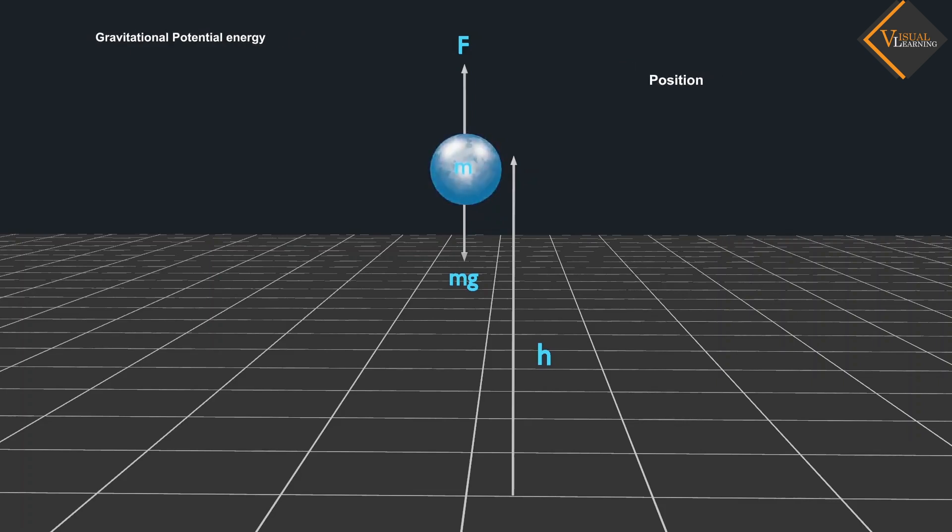Now, let the work done on the object against gravity be W. That is, force times displacement. As we know that force is equal to the weight, Mg, and the displacement is height H. Then, work done W will be MgH.